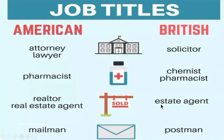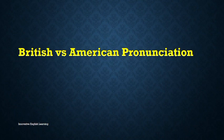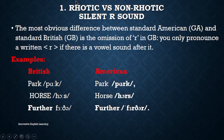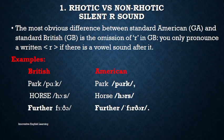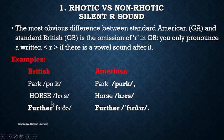Next we have British versus American pronunciation. The first difference is rhotic versus non-rhotic. In British English we do not pronounce 'r' unless it is followed by a vowel — so if there is a consonant after 'r', we do not pronounce it. In American English we pronounce 'r' in all positions. For example: 'park' in British sounds like 'pahk', while in American it sounds like 'park' with the 'r'; similarly 'horse', 'further'.